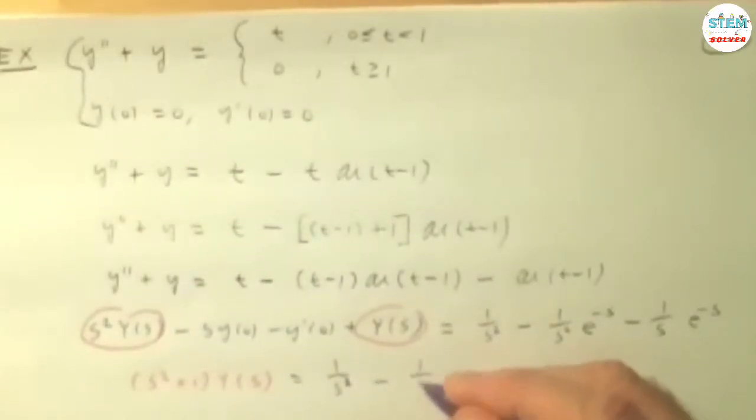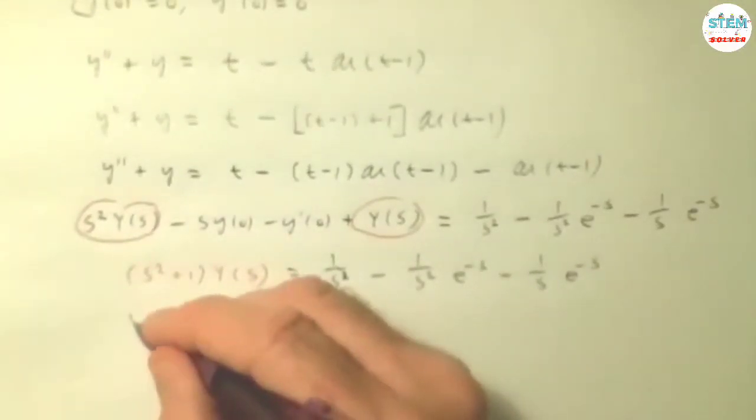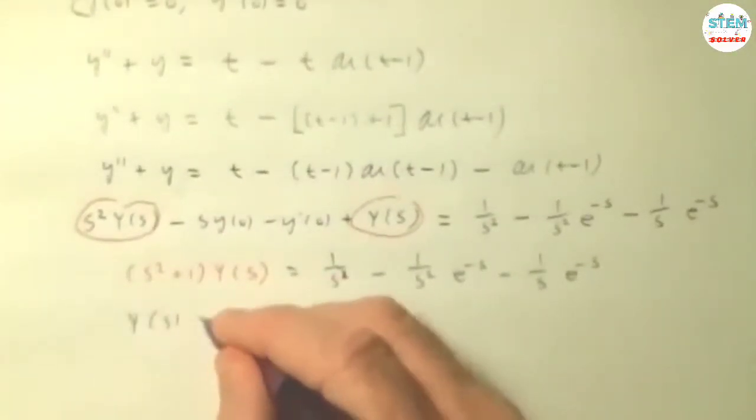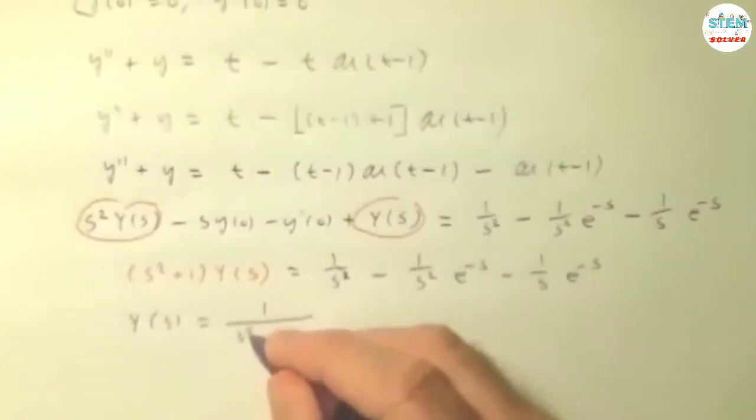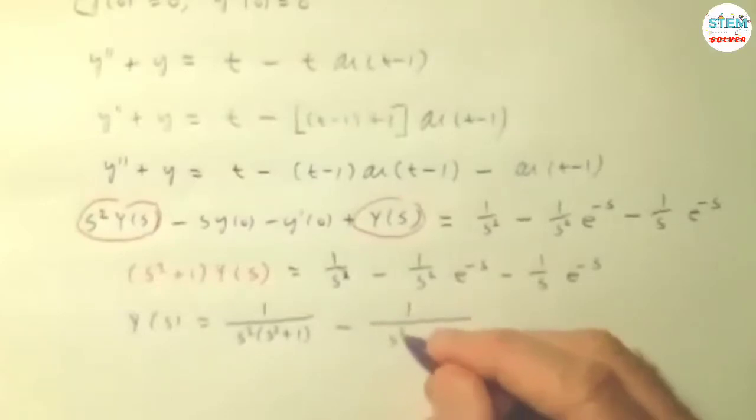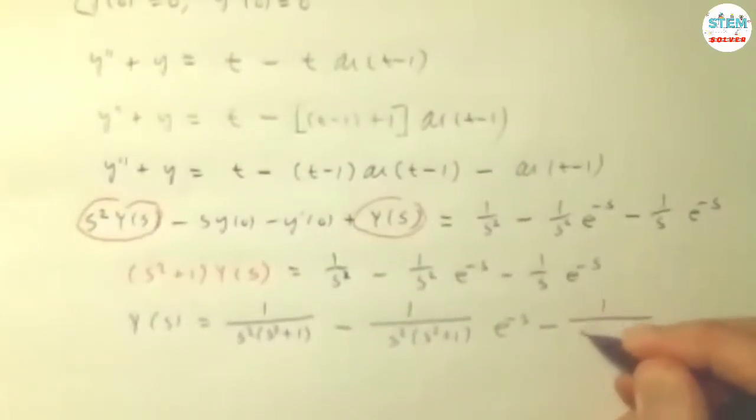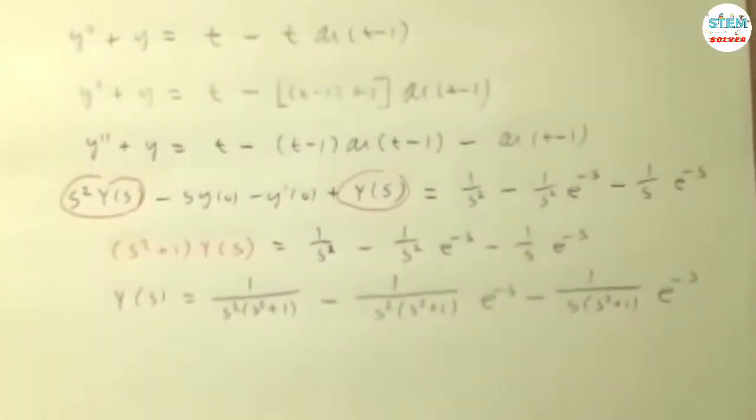So I just end up with 1 over s squared minus 1 over s squared e to the negative s minus 1 over s e to the negative s. Solve for y of s by dividing. And so we have 1 over s squared times s squared plus 1 minus 1 over s squared times s squared plus 1 e to the negative s minus 1 over s times s squared plus 1 e to the negative s.